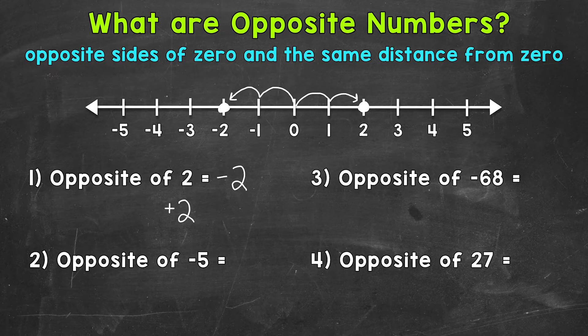Let's move on to number two, where we have the opposite of negative five. And we're going to use the number line for this one as well, starting with negative five, which is right here. As far as distance from zero, well, one, two, three, four, and five. So we went to the left of zero and a distance of five.